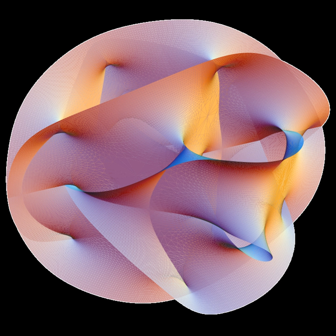For example, a subclass of the K3-manifolds is elliptically-fibred, and F-theory on a K3-manifold is dual to heterotic string theory on a two-torus.